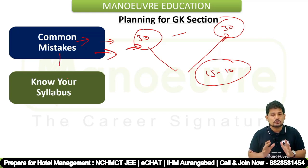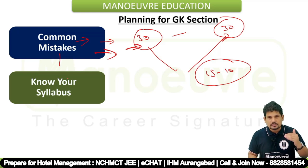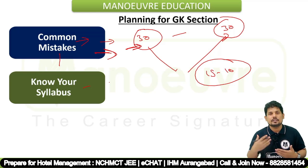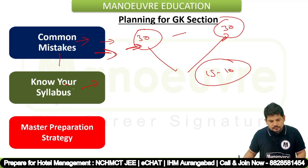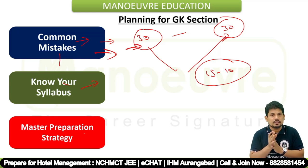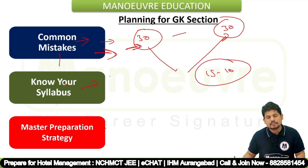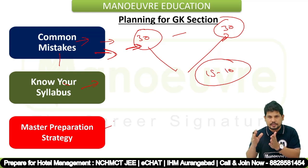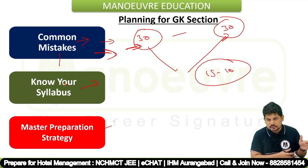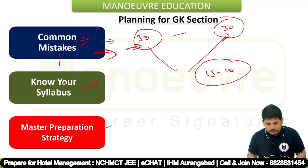After that, know your syllabus. The syllabus includes history, geography, and polity — these are important parts. It is not very difficult if you have a consistent way to prepare. Based on the way I have been guiding students for the last 4-5 years, students are getting good marks. After knowing the syllabus, you need a master preparation strategy — a consistent weekly plan. For example, one hour for history for 15 days, or one week for polity according to your capacity. Make a plan, complete the detailed information, and then practice in MCQ format.